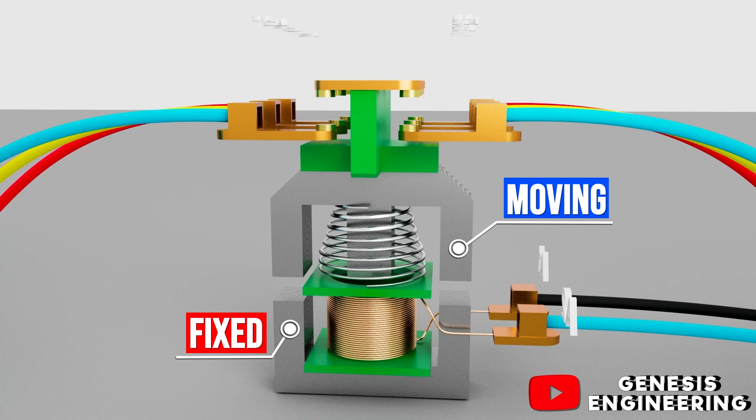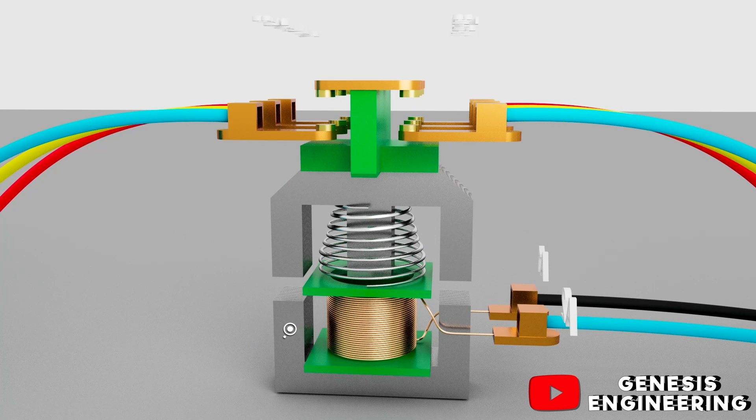With the contactor de-energized, the moving core is forced upward by a spring. Spring pressure causes the contacts to be open while the contactor is de-energized.